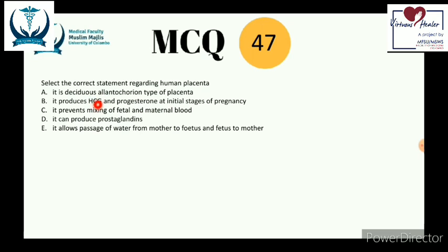The placenta prevents mixing of fetal and maternal blood — protecting the fetus from Rh-factor mismatch and certain dangerous substances. It can also produce prostaglandins. Water exchange between mother and fetus is transplacental — statement E (placenta allows passage of water between mother and fetus) is true.